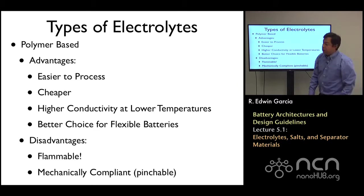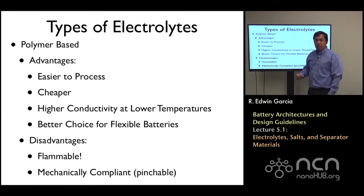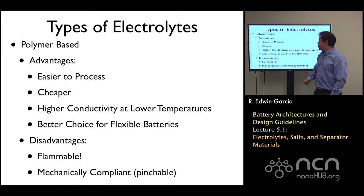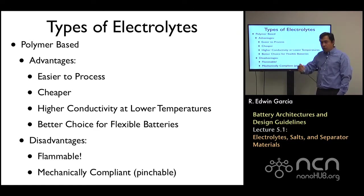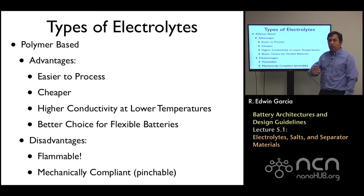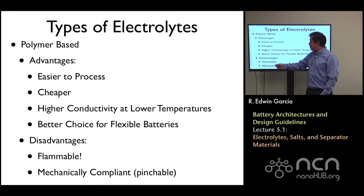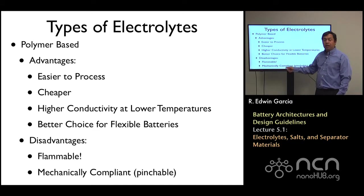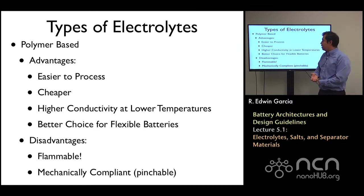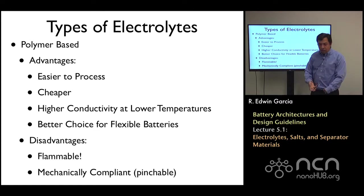Unfortunately, most of the electrolytes in this case are polymer-based. Their base advantage is that they're easy to process and they're very cheap, which is something we want for widespread applications. They do have high conductivity at low temperatures — by low temperatures, we mean room temperature, basically close to 20 or 30 degrees Celsius. Their disadvantages are that because they are polymeric and organic, they're flammable and mechanically compliant. In some cases they're liquids, in other cases they're gels, and people typically put binders to stiffen them up a little bit, but overall it's hard to give the system mechanical integrity.